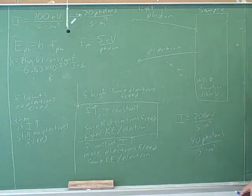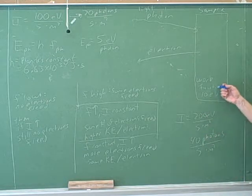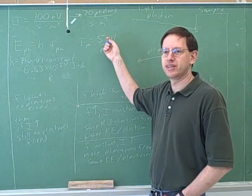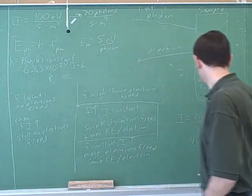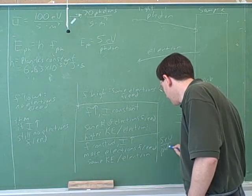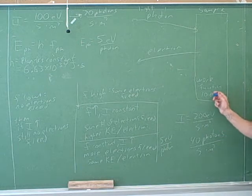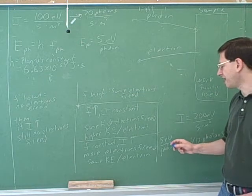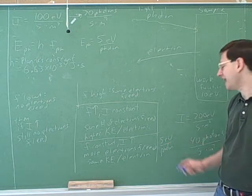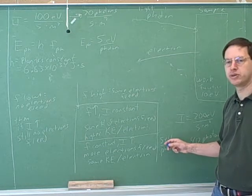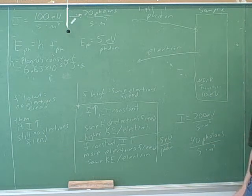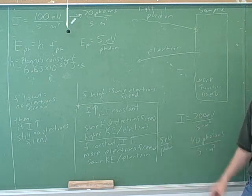So now there's twice as many photons hitting. Would that allow us to get off any electrons here? Well, think about it. Each of the photons is still 5 electron volts — it's still 5 electron volts per photon. But how much energy does it take to free an electron? 10 electron volts. Remember that the photons are not allowed to cooperate with each other. Each photon can only deliver its set amount of energy; it has to do it by itself. It can only free the electron if it can do it by itself. So this is still not enough to free the electron, because we haven't changed the photon energy.